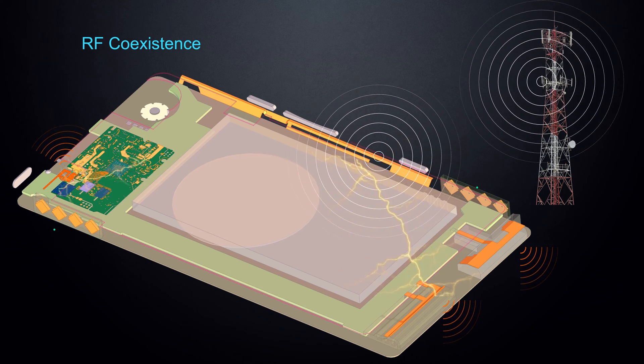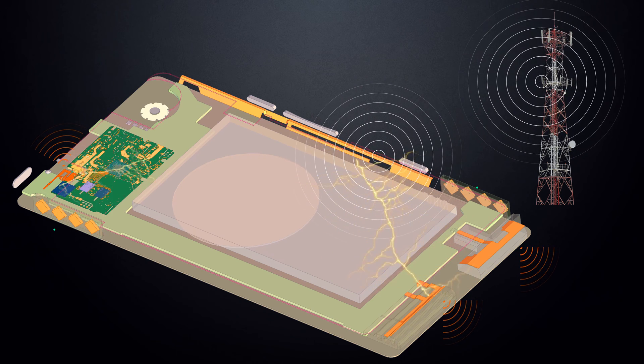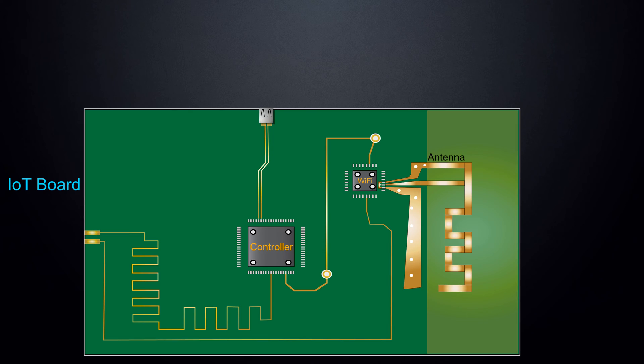Therefore, regardless of digital systems or transceivers, we must consider all forms of RFI. This generic IoT board serves as a great example. It comprises a controller for video streaming and an antenna connected to a Wi-Fi microchip.